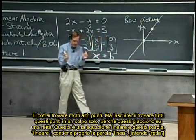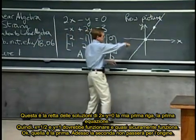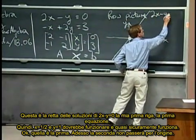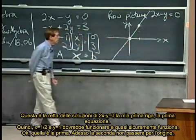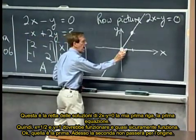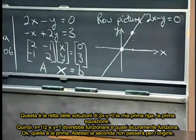This is a linear equation, and that word linear got the letters for line in it. That's the equation, this is the line of solutions to 2x minus y equals zero, my first row, first equation. So typically maybe x equal a half, y equal one will work, and sure enough it does.